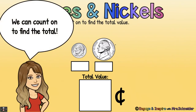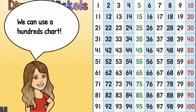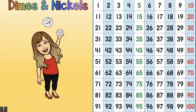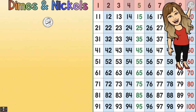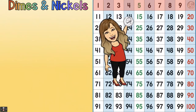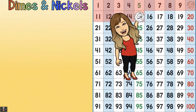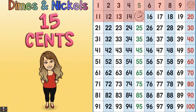We can also count on to find the total. Ten plus five is fifteen — first we count by tens, then we count by fives, and we find that the total is fifteen cents. We can also use a hundreds chart. I'll bring the dime over to ten, then bring the nickel over and count one, two, three, four, five spaces — so the total is fifteen cents.